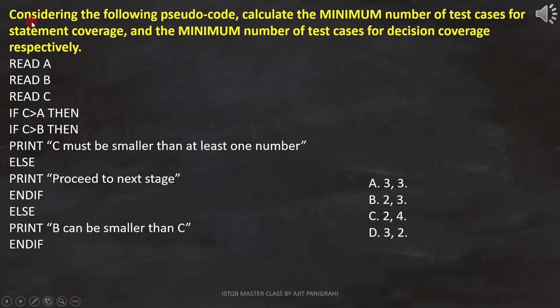Here the question is, considering the following pseudocode, calculate the minimum number of test cases for statement coverage and the minimum number of test cases for decision coverage respectively. Then these options are provided, where the first element is for statement and second element is for decision.